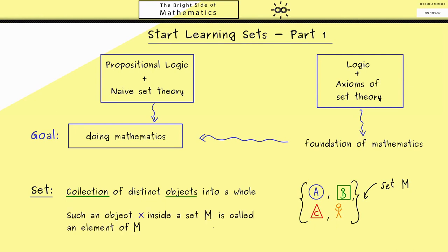Now in order to make everything easier we call such an object x inside a set M just an element of M. Or even better we use a short formula for this. So we use this special ∈ for element and read it as x in M. So for the example on the right hand side we would write this circle of A is an element of M.